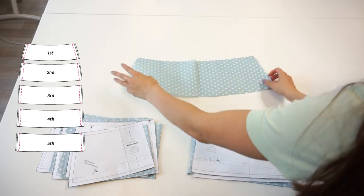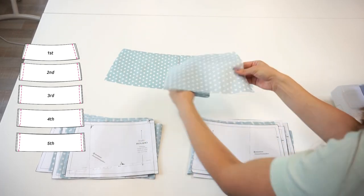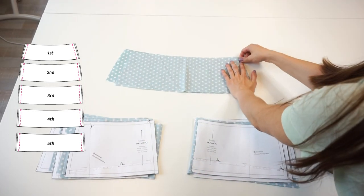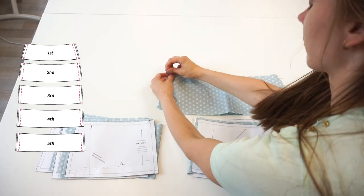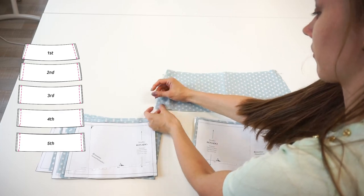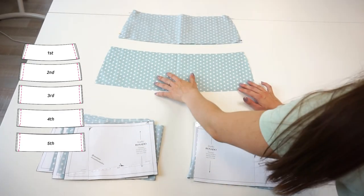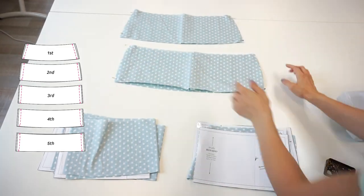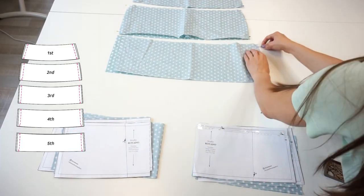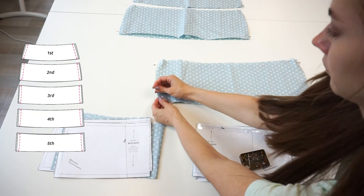Lay the accordion skirt back panels with front panels right sides facing. Pin the side seams. Be careful not to mistake the panels. The first panels go together, the second panels go together, and so on.